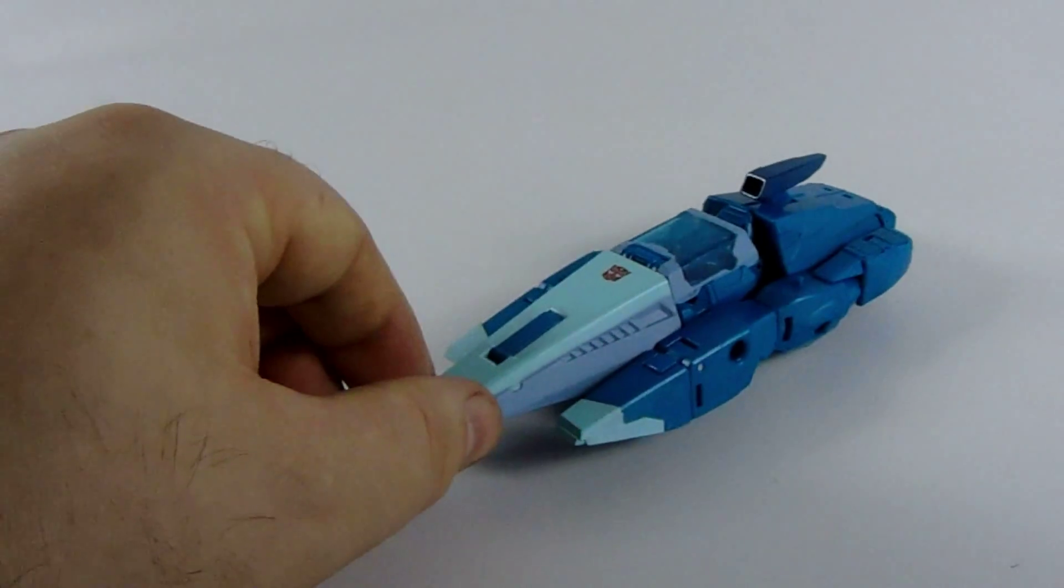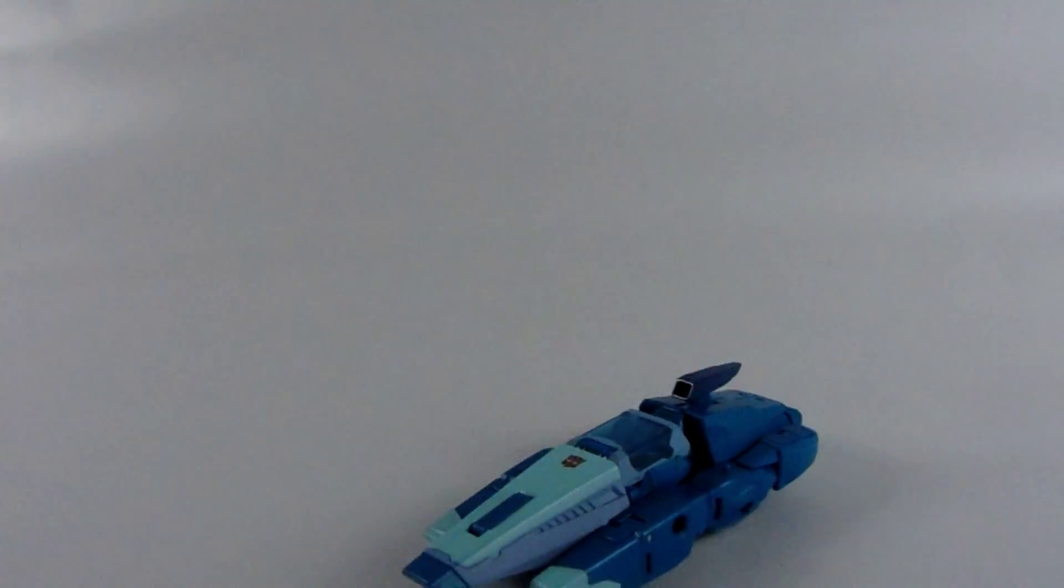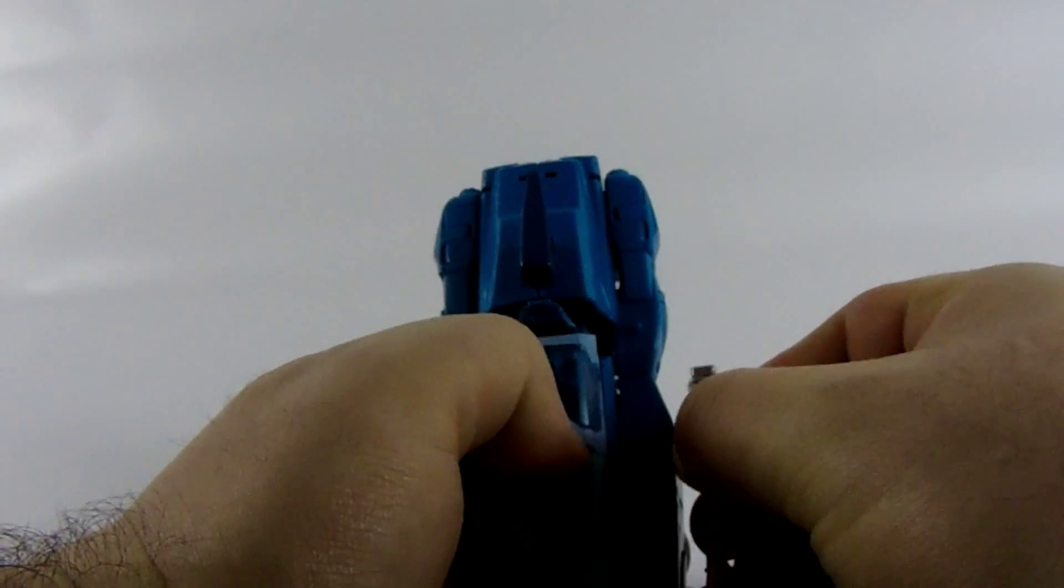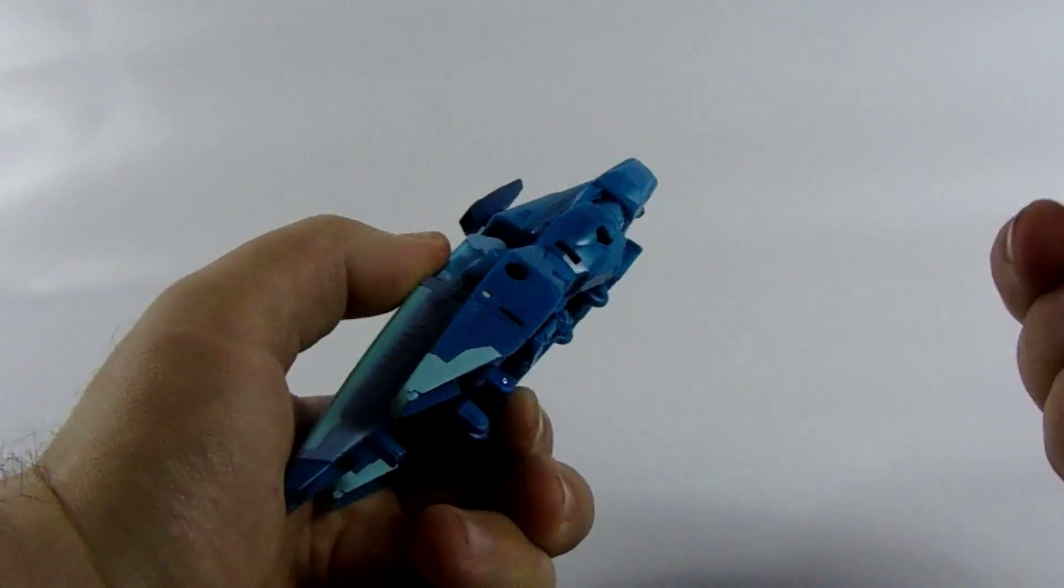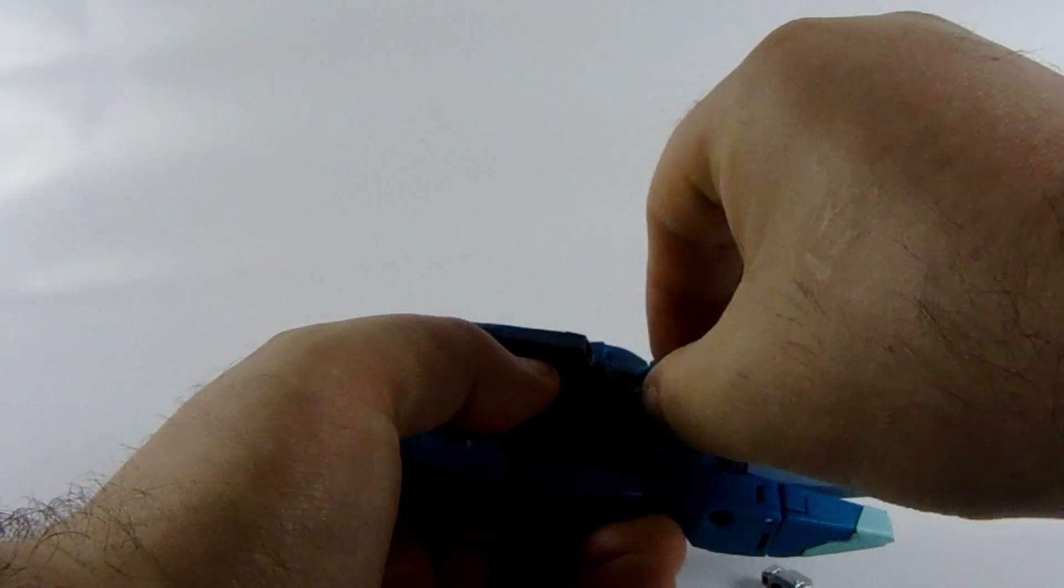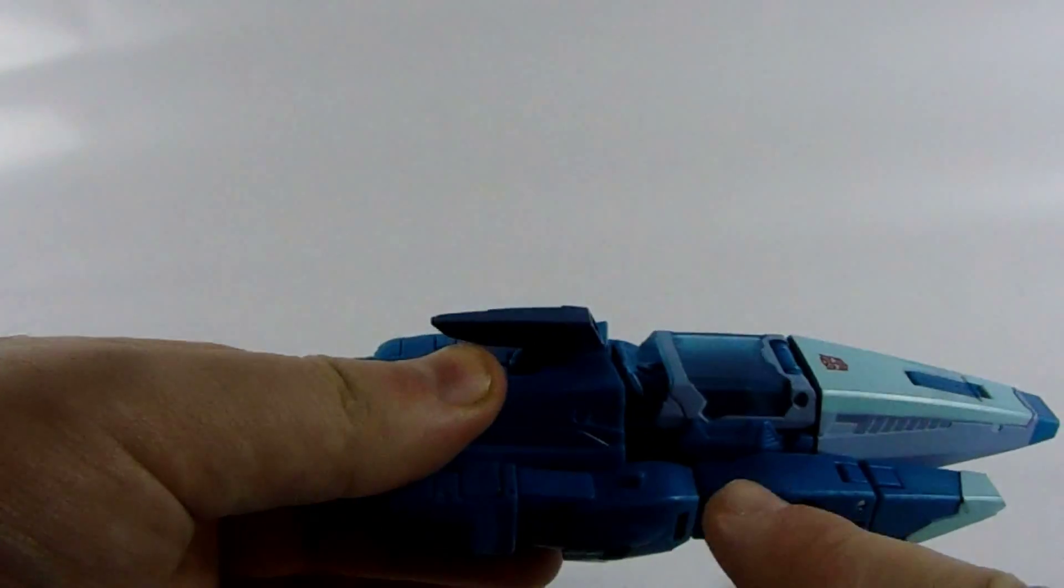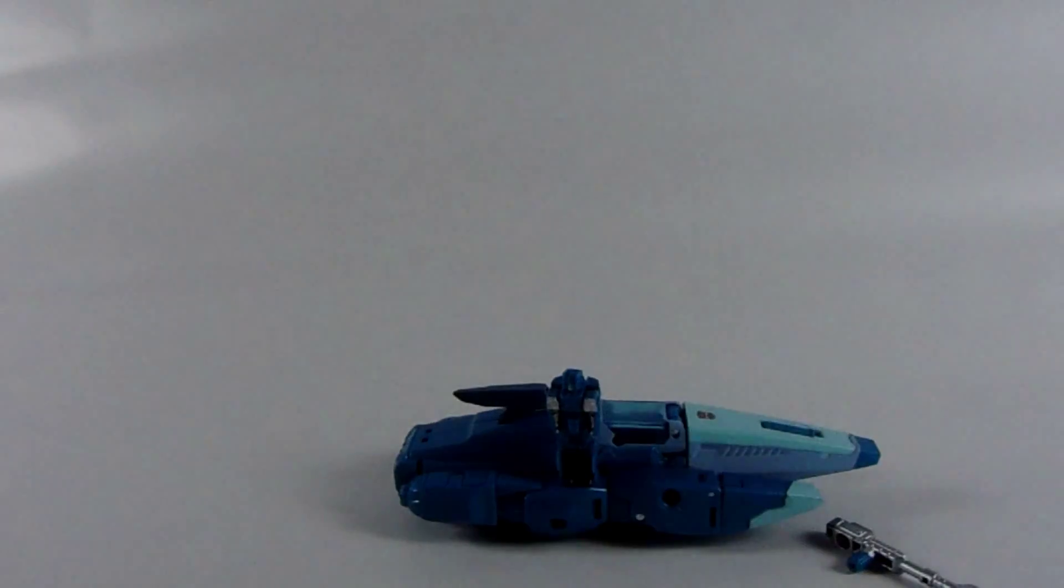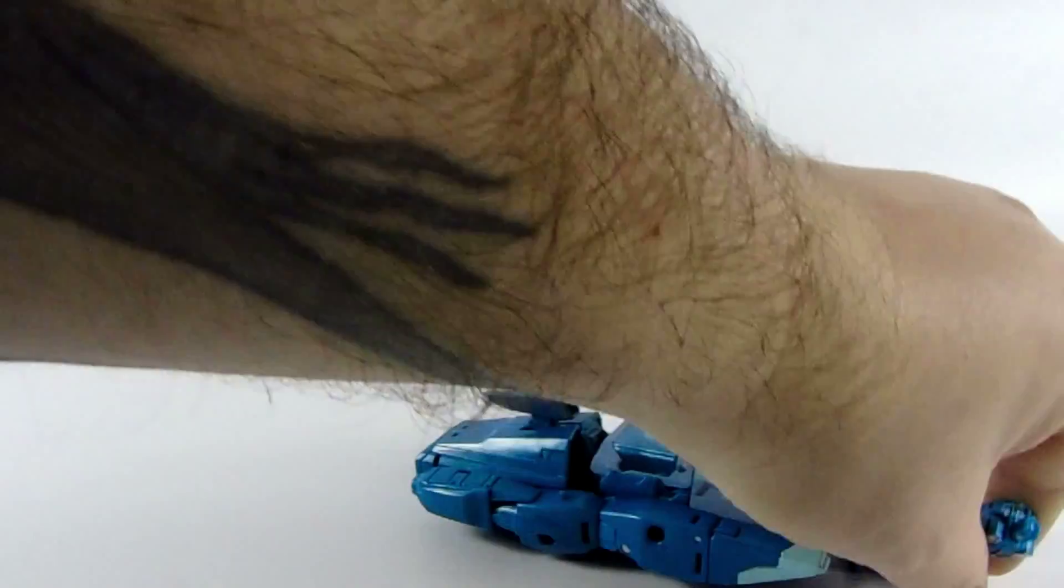He comes with a little gun that you can put on there for storage or to give him a little weapon. There's another point on there that you can put in as well. There's little pegs where you can stand Titan Masters on the side. I don't know why you'd want to do that but you can, it's an option.